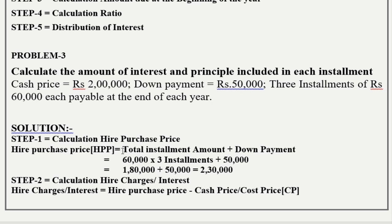Hire purchase price equals total installment amount plus down payment. Total installment amount: 3 installments of Rs. 60,000 each, so 60,000 into 3 equals Rs. 1,80,000. Plus down payment of Rs. 50,000. Therefore, Rs. 1,80,000 plus Rs. 50,000 equals Rs. 2,30,000. So, hire purchase price is Rs. 2,30,000.